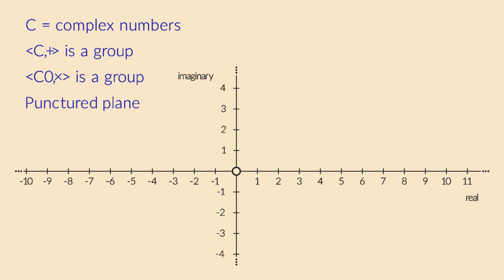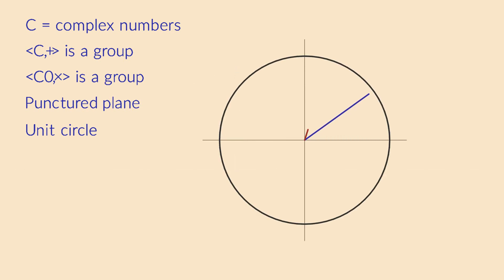In the punctured complex plane, the unit circle is a subgroup under multiplication. It contains the neutral element 1. The product of two numbers on this circle is always on the circle, because we just add up the angles. The circle is invariant under complex multiplication. Or, to put it in other words, complex multiplication is a symmetry operation on the unit circle.